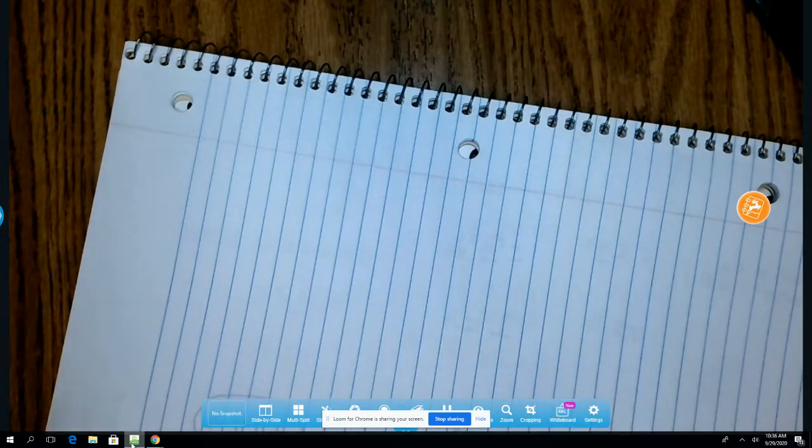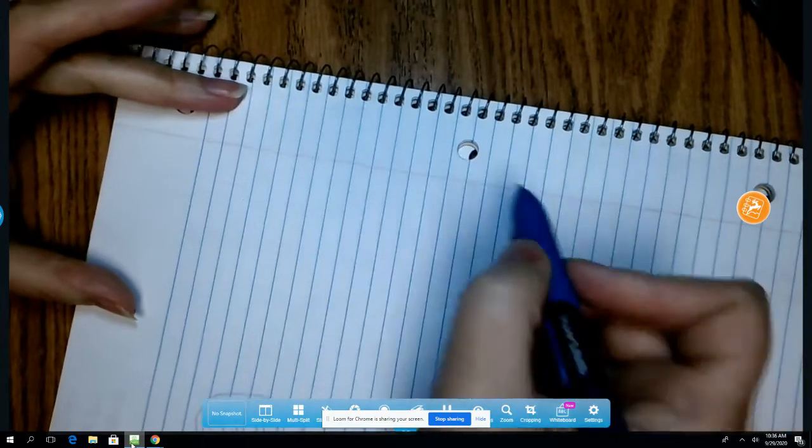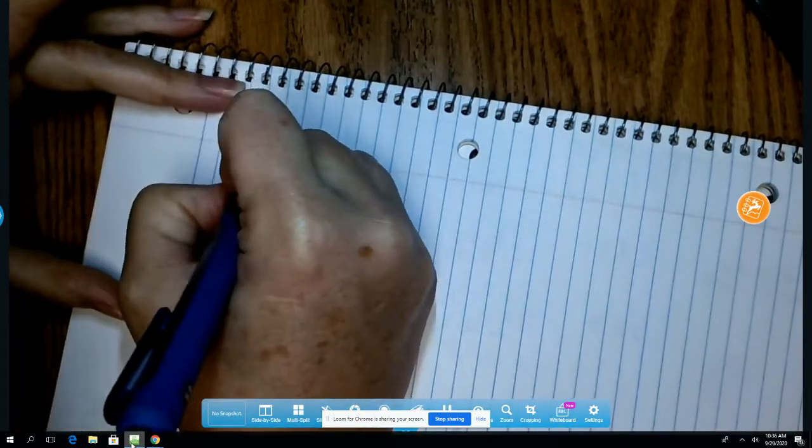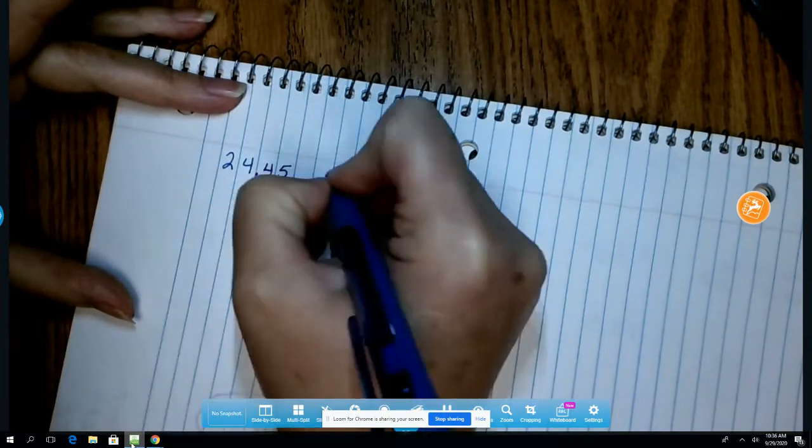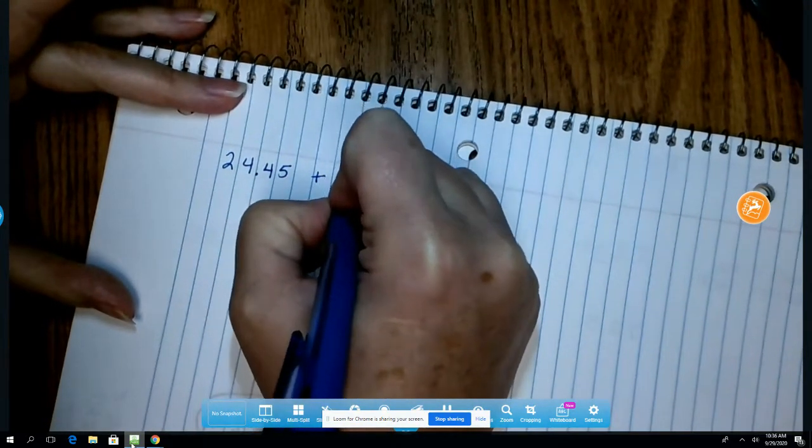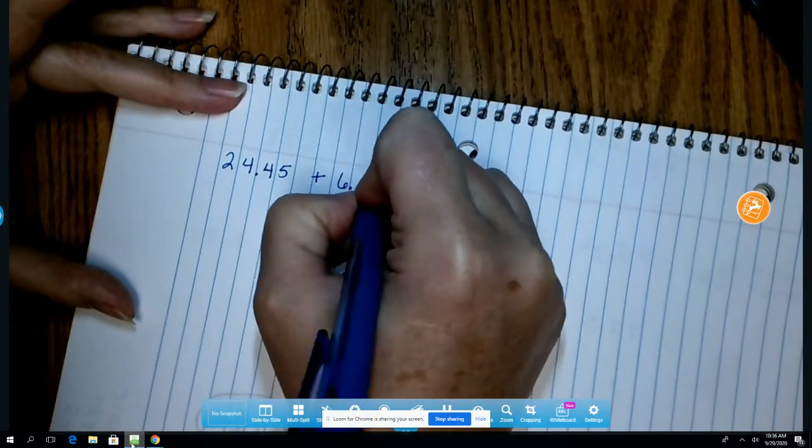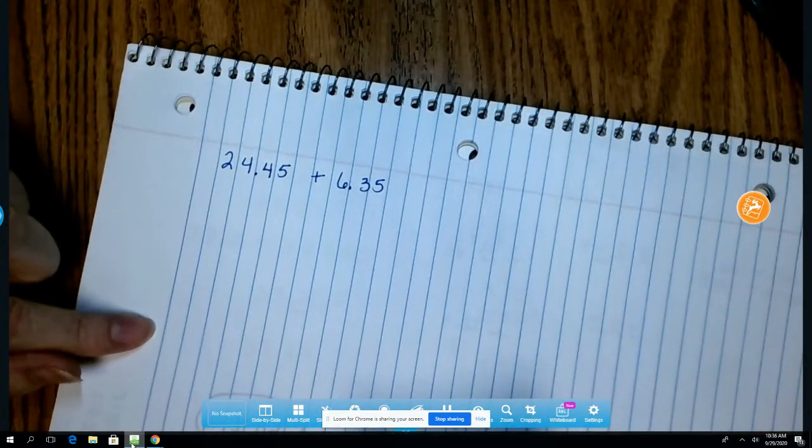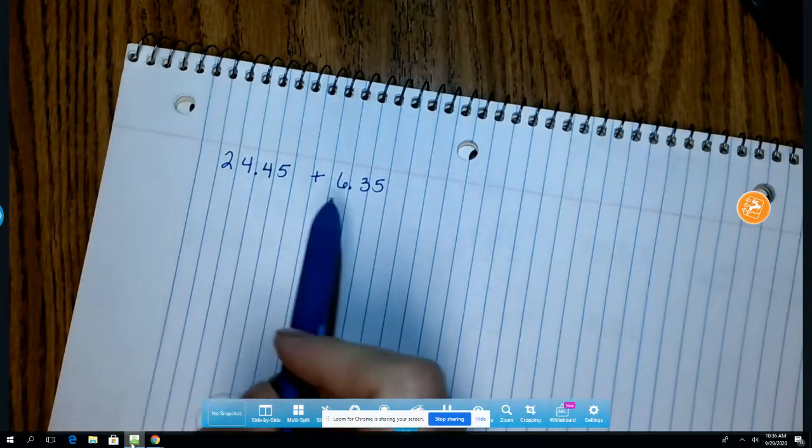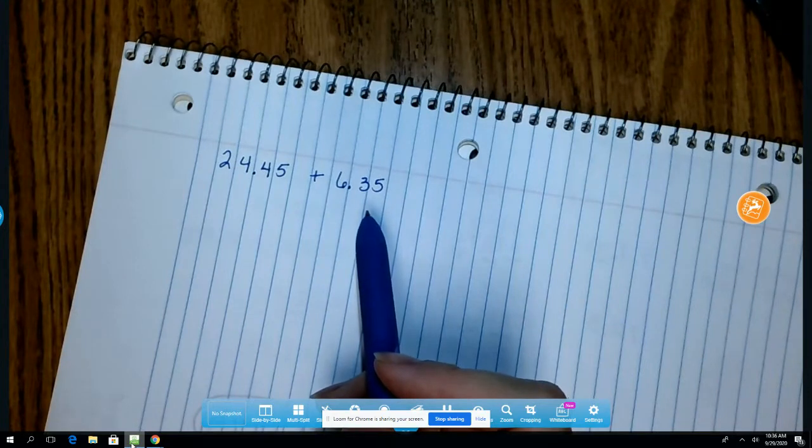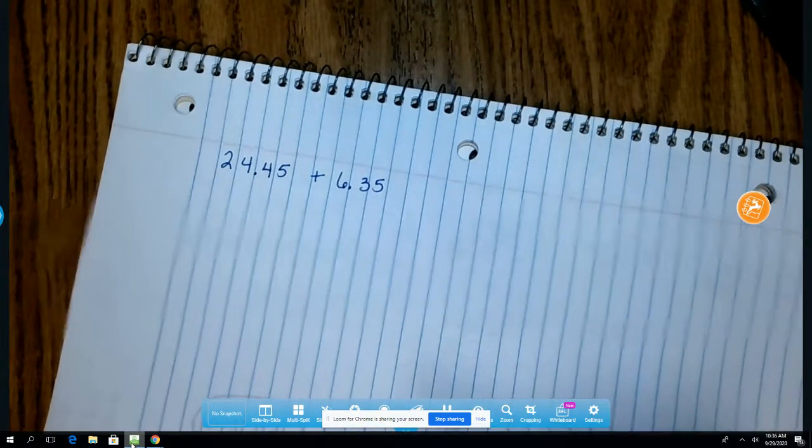So the second trick is that you want to keep your decimals in a line, which means if your problem is written across such as 24 and 45 hundredths plus 6 and 35 hundredths, I'm going to want to write that vertically and that's going to help me line those up. Yes you could do it like this but it's just easier if you line them up where they're going down.